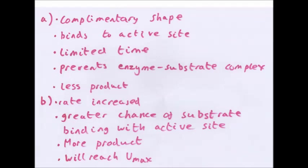Right. So, describe how a competitive inhibitor works. It has a similar shape to a substrate. It is complementary to the active site. It binds to the active site for a limited time and it prevents an enzyme substrate complex from forming, so there's less products. And then explain how an increase of substrate molecule affects rate of reaction. Rate of reaction is increased because there's a greater chance of substrate binding with active sites, creating more products, but eventually it will reach Vmax. That is basically, it will reach the maximum rate of reaction because there's no more active sites available, so the rate of reaction stays the same.